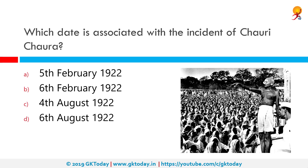Which date is associated with the incident of Chauri Chaura? The correct answer is 5th February 1922. The Chauri Chaura incident occurred at Chauri Chaura in the Gorakhpur district of the United Province in British India on 5th February 1922, when a large group of protesters participating in the Non-Cooperation Movement clashed with the police who opened fire. This incident caused Mahatma Gandhi to call back his support from the Non-Cooperation Movement.